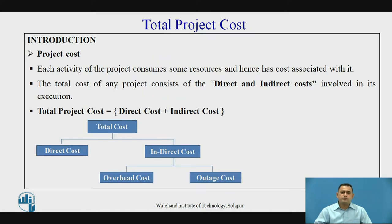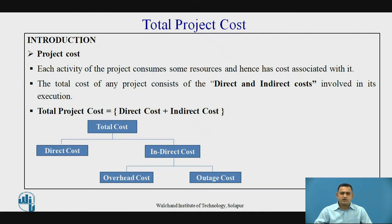The total project cost is nothing else — it is a summation of the direct cost as well as the indirect cost. As we observe in the project, there are n number of activities which consume resources, and these resources are finally termed in terms of cost. So the total project cost is equal to direct cost plus indirect cost.